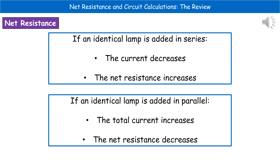If we add an identical lamp in series, we find that the current decreases and the net resistance increases. Whereas if we add that identical lamp in parallel, the total current is going to increase and the net resistance will decrease.